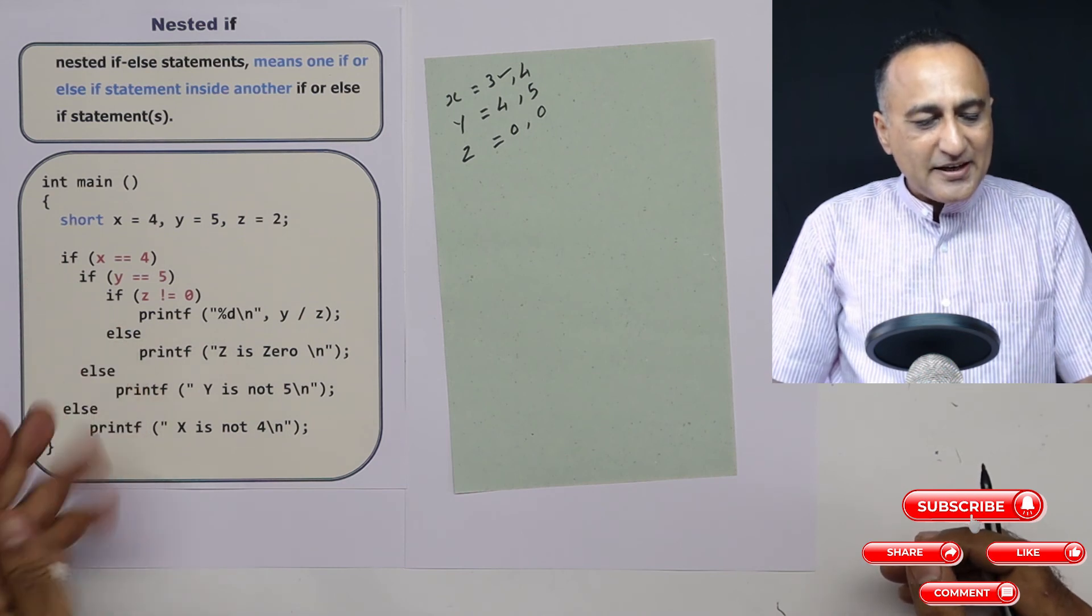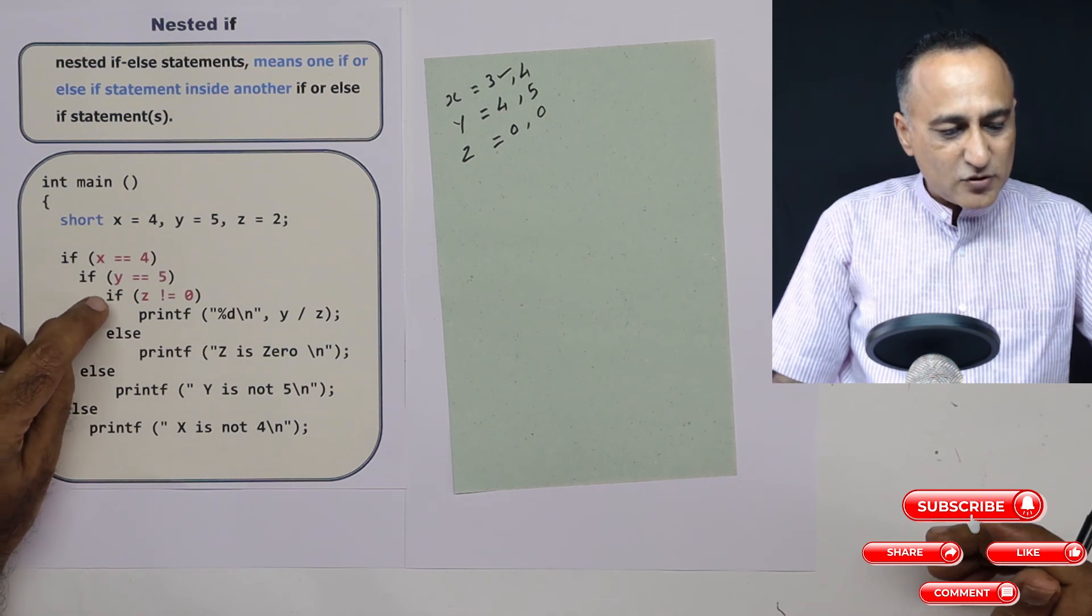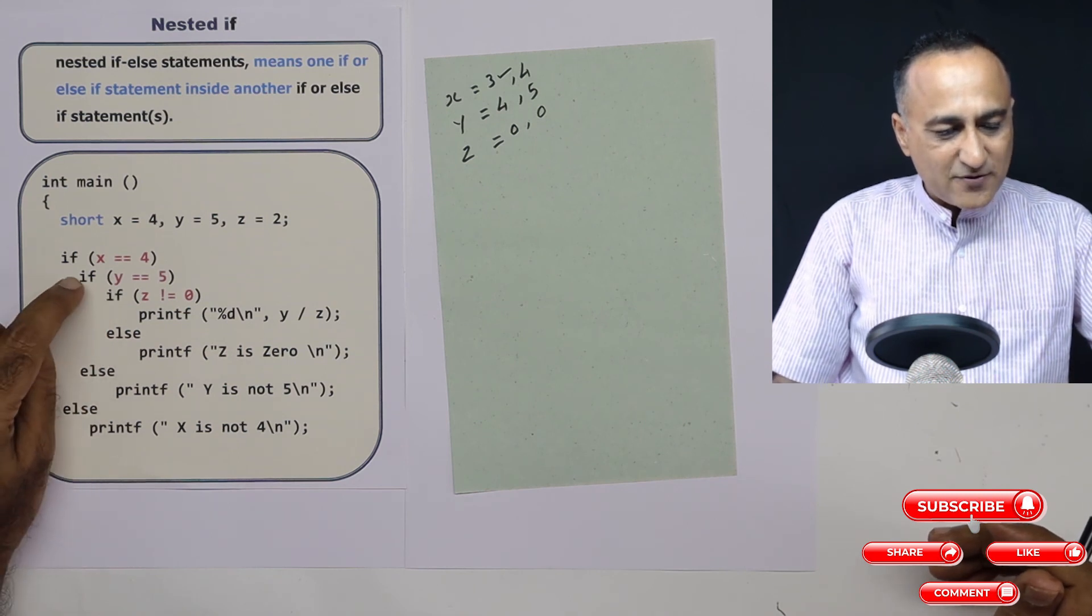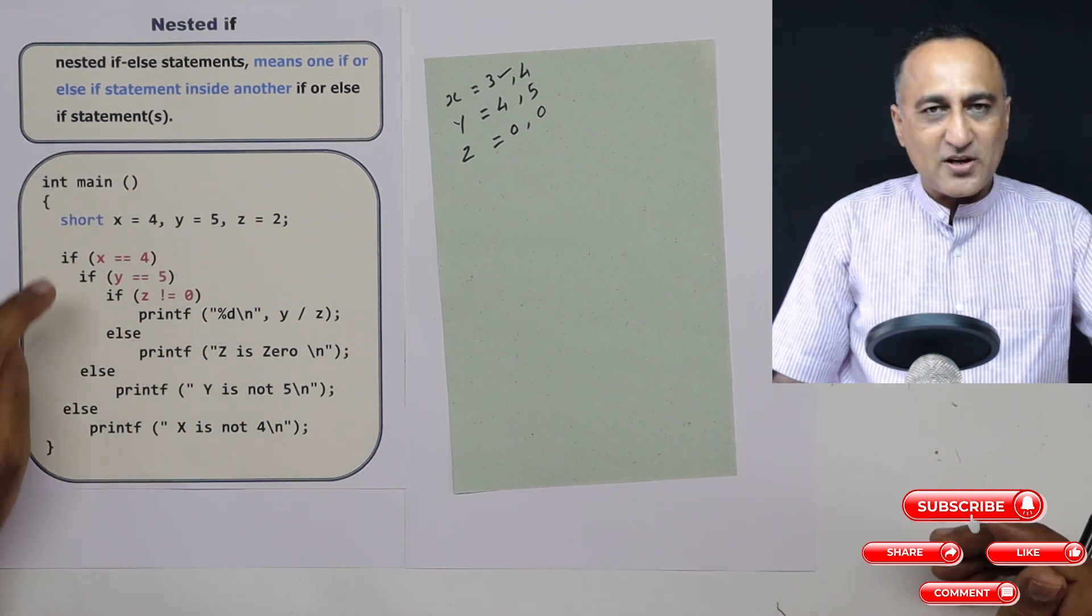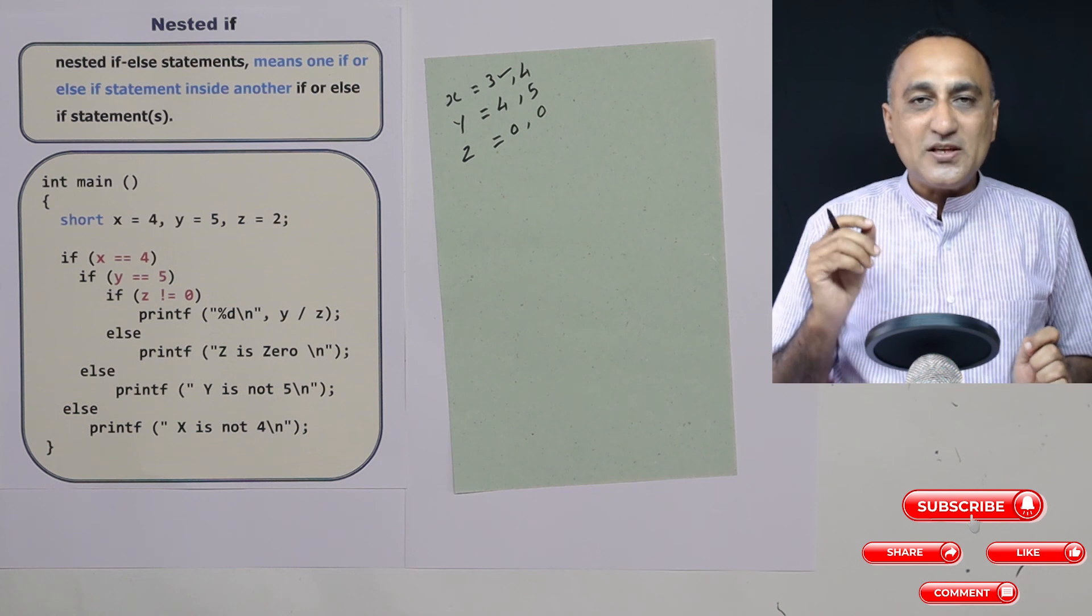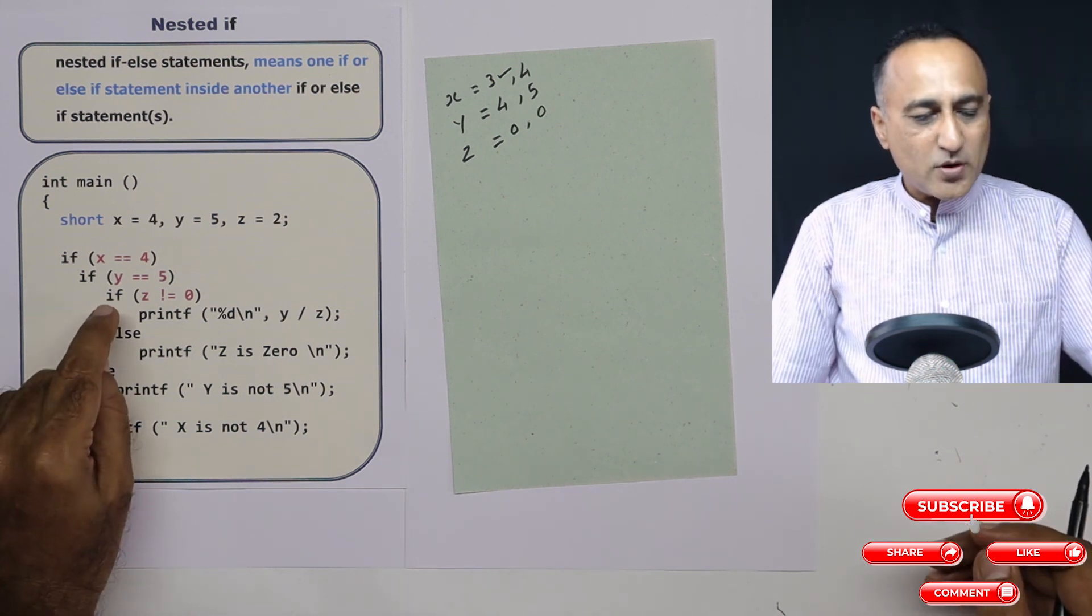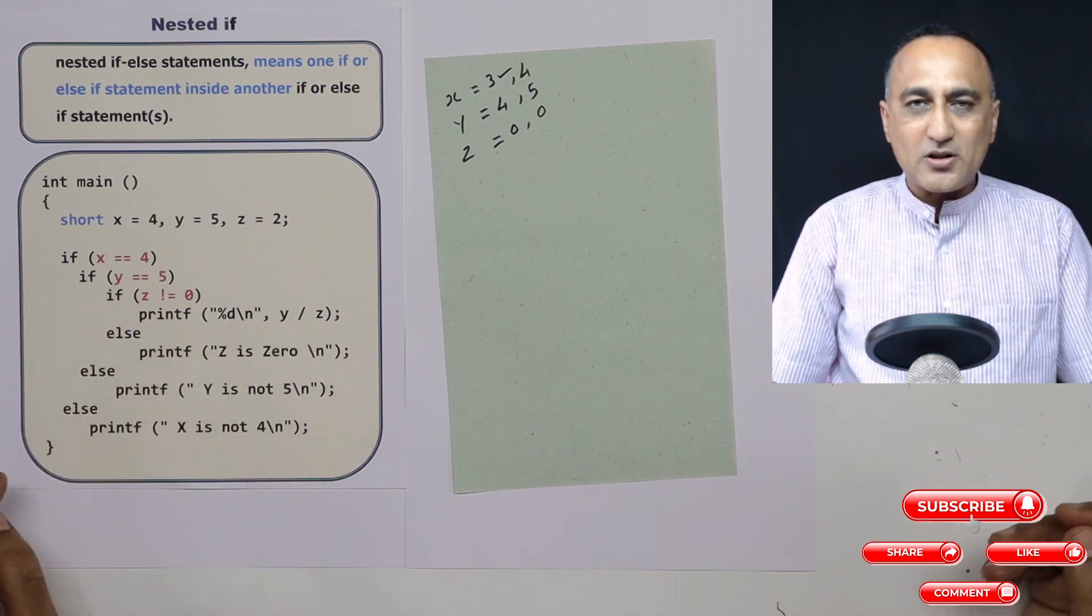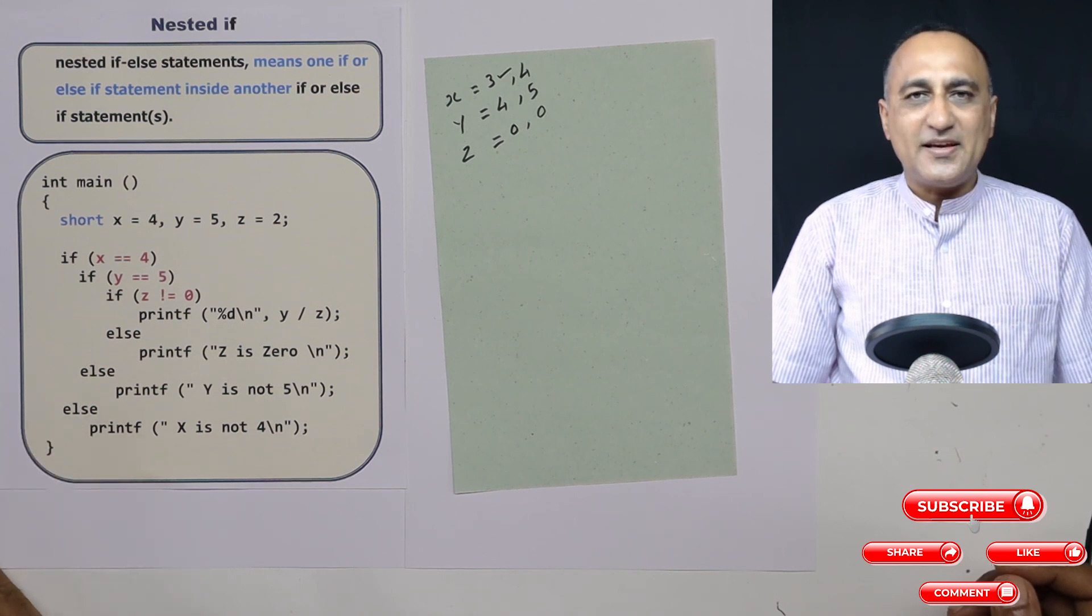The second thing is be sure you indent it properly, that means you give proper spacings so that here if you see I have matched this else with this if, this if is matched with this else, and this else is matched with this if because this way I can clearly understand which if is matched with which else. Another way to make it more meaningful is you can use the flower braces or the flower brackets to make the association very clear.